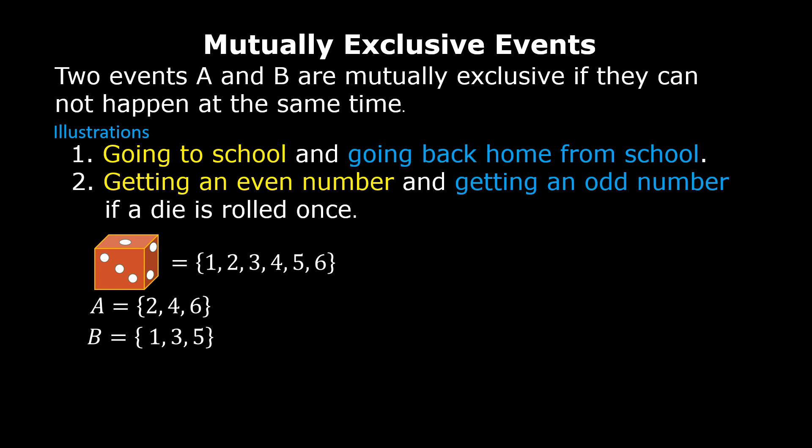These two events cannot happen at the same time. If a die is rolled once, you either get an even number or an odd number. You cannot get an even number and an odd number at the same time. Also, we can see that there are no common possible outcomes between event A and event B. Therefore, these two events are mutually exclusive events.